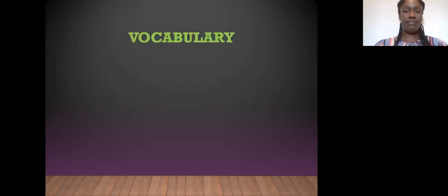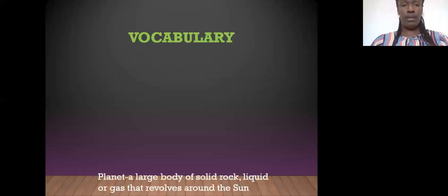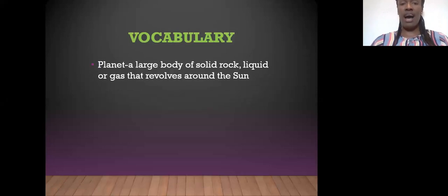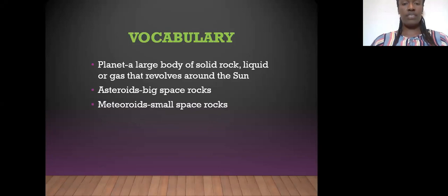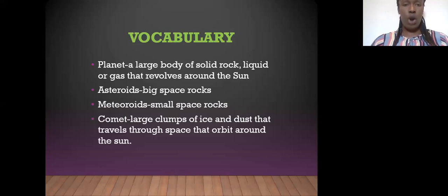Some words that may come to your attention during this lesson should be planets, which is a large body of solid rock, liquid, or gas that revolves around the Sun. Asteroids is a big space rock. Meteoroids are small space rocks. Comets are large clumps of ice and dust that travel through space that orbit around the Sun.